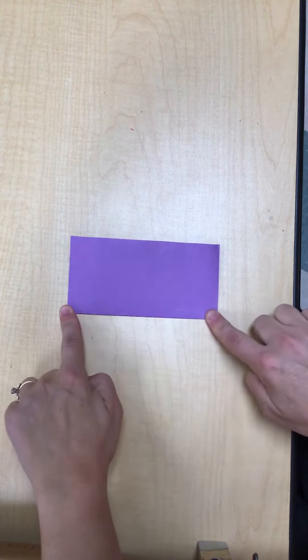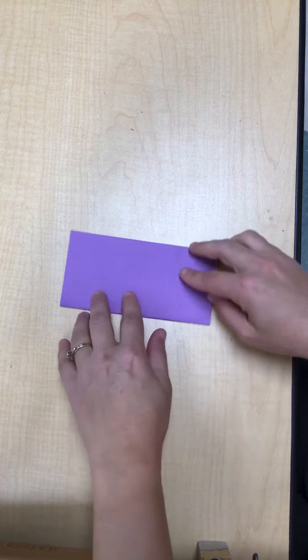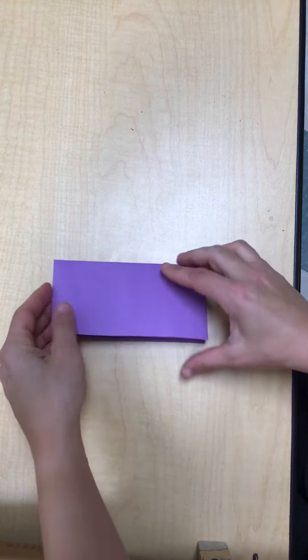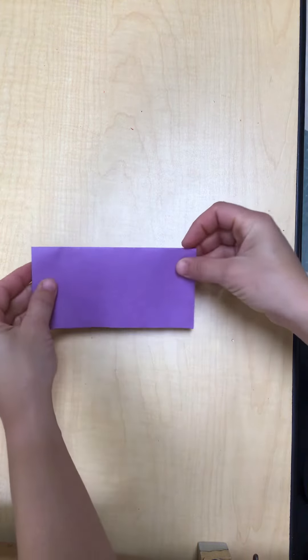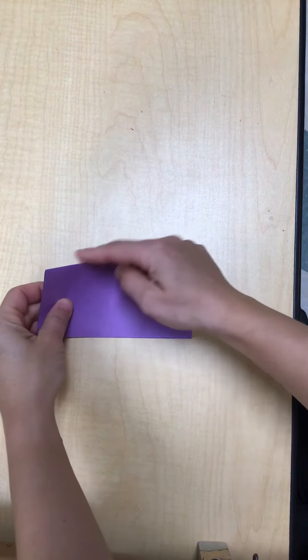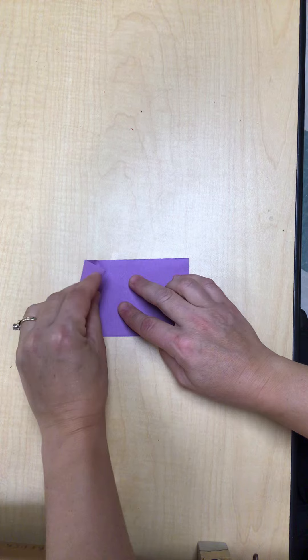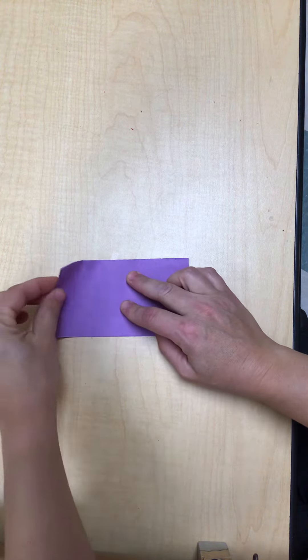Okay, rub your finger along that edge. Then, when you have it folded, I have my open end and my folded end. I'm going to take off of the folded edge. I'm going to fold it down.